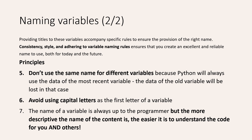So if you use the same name for different content, you will probably always make a mistake. If you have different content, use different variables. Number six: avoid using capital letters as the first letter of your variable. And number seven, in my opinion the most important one: the name of a variable is always up to the programmer, but the more descriptive the name of the content is, the easier it is to understand the code for you and for others.